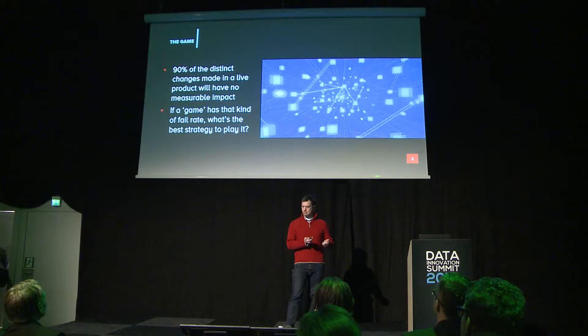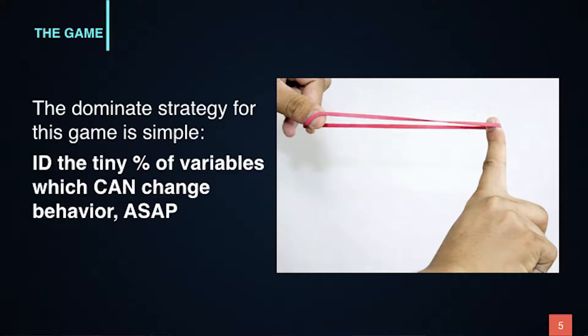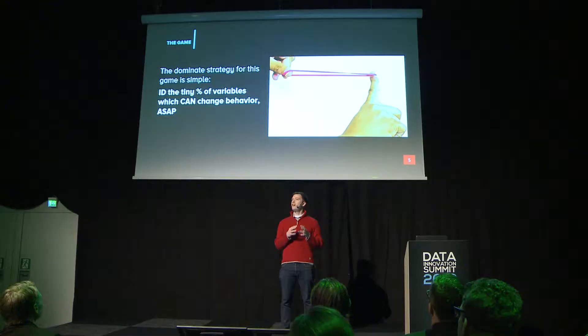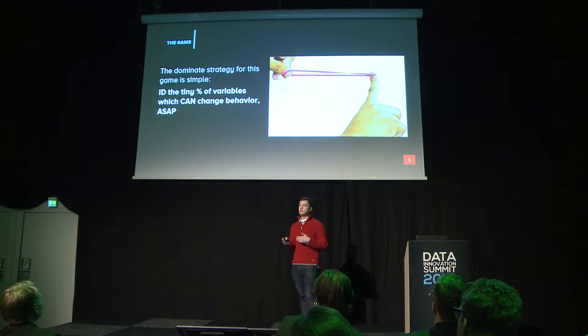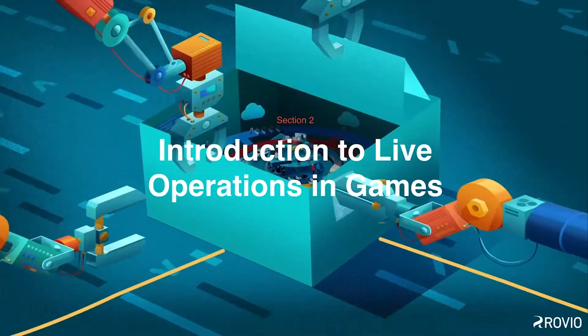If you took a stack of all the changes I've seen personally made in games, over all the various companies and all of our various projects, most of the time there's no measurable impact. So the question is, if this is the game that we're playing, what's the best strategy? The approach we take is really simple: we just try to find the things that have any measurable impact, positive or negative. We'll go through a product very quickly, very brutally, without a lot of design sensibility, and just make big changes, and just see what changes behavior. Because most things don't.